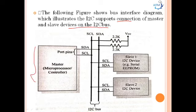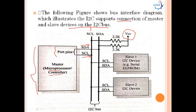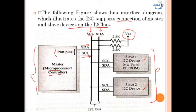The bus interface diagram illustrates the I2C connection of master and slave devices. The master device — either a microprocessor or microcontroller — has two lines: the serial data line (SDA) and serial clock line (SCL). VCC power supply is connected to the system. On the I2C bus, there may be multiple slaves; for example, slave 1 (such as a serial EEPROM) and slave 2, with all operations controlled by the master device.